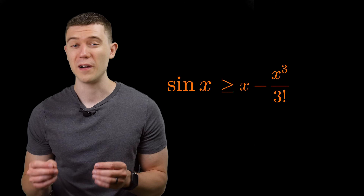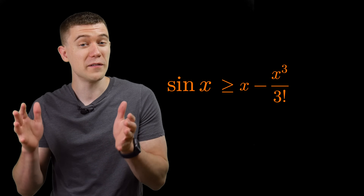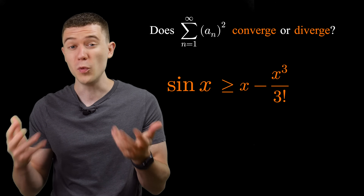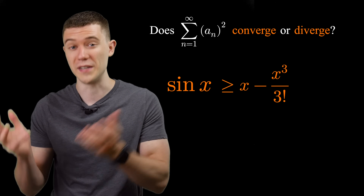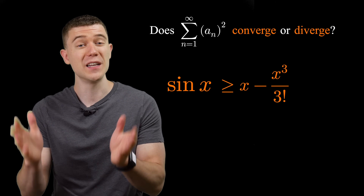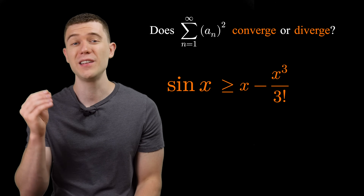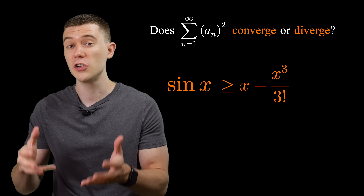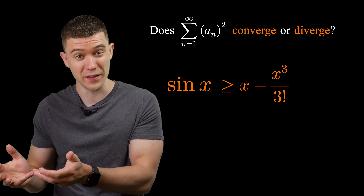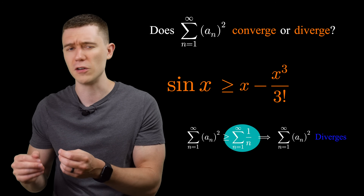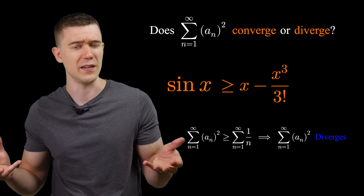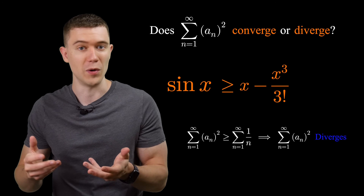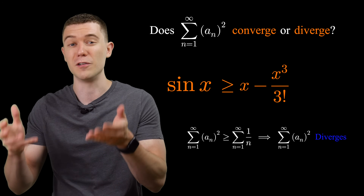That was a bit out of nowhere, but what we actually want is to figure out the sum of a sub n squared — whether it converges or diverges. One way to show divergence is to directly compare it to the harmonic series, the sum of 1 over n. If we show our sum is greater than the harmonic series, and the harmonic series diverges to positive infinity, then our sum must also diverge by comparison.